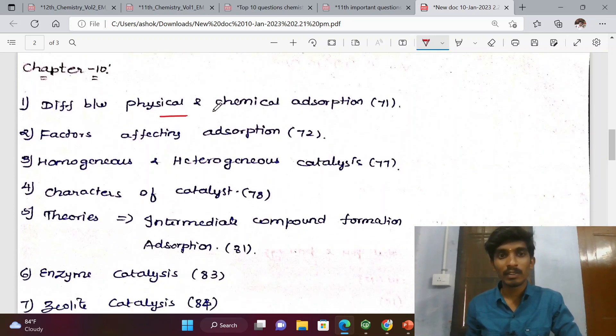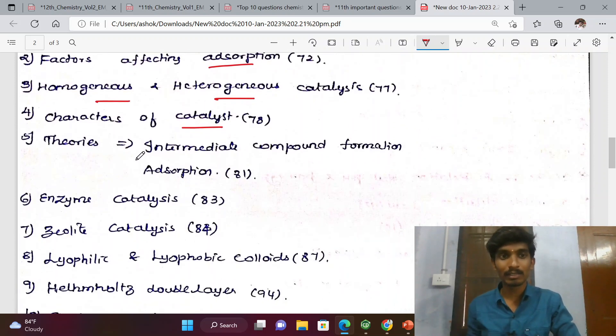Chapter 10, Surface Chemistry: Physical and chemical adsorption difference, factors affecting adsorption, homogeneous and heterogeneous catalysis, characteristics of catalysis, intermediate compound formation theory, and adsorption theory.